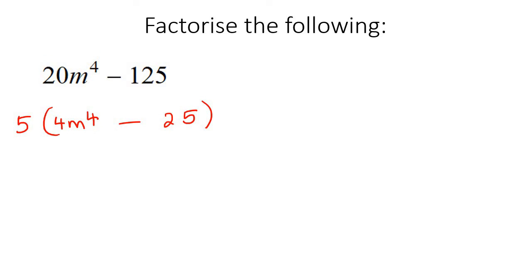So what happens now is that these are now perfect squares. And so what happens is you're going to say 5, and then you're going to make two brackets. The square root of this would be 2m to the power of 2, and the square root of 25 is 5. And then the one has a plus, and the other one has a negative.